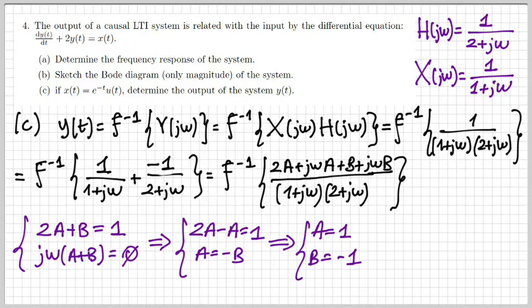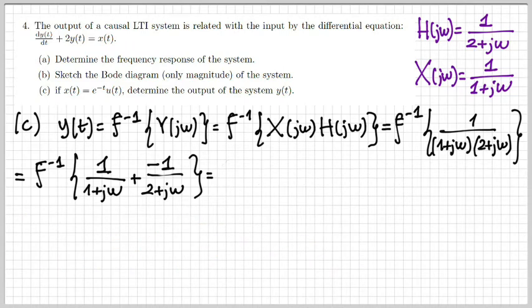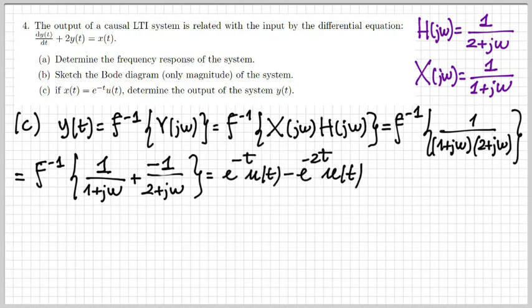Now we have the inverse transform of a sum. By linearity, we inverse-transform each term separately and sum the results. The first term gives e^{−t}·u(t) and the second term gives −e^{−2t}·u(t) — both right-sided exponentials. So the output is y(t) = e^{−t}·u(t) − e^{−2t}·u(t).